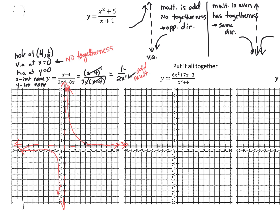Now let's put the other one together. We had no vertical asymptote, no holes, a horizontal asymptote at y equals 6, a y-intercept at negative 3/4, and two x-intercepts: one at negative 3/2 and one at 1/3. You can flip over the other side of your paper to see those.